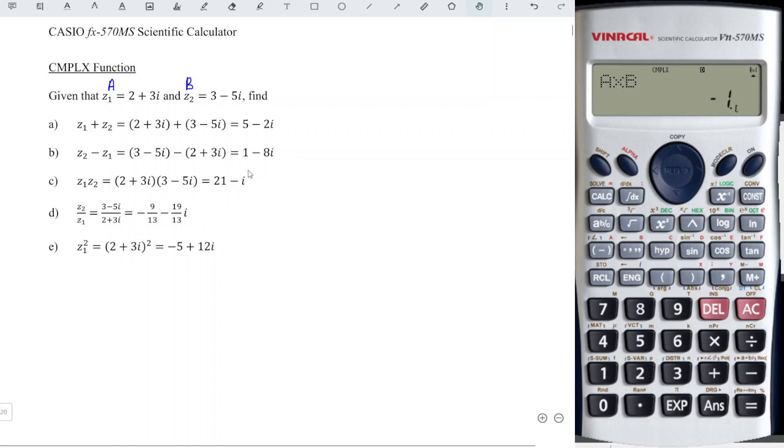Next we have b over a, which means b divided by a. So we have b divided by a and we obtain 9. This is in decimal numbers, so we can Shift format to get it in proper fraction.